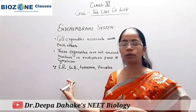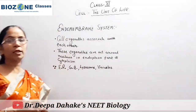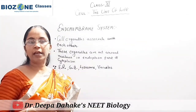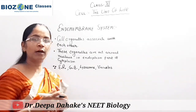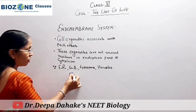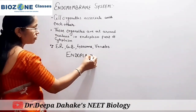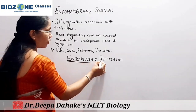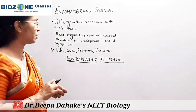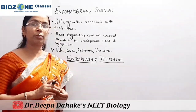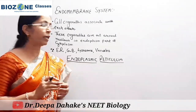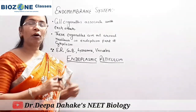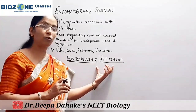Now we directly begin with our session: what is endoplasmic reticulum and how does it vary when present as smooth endoplasmic reticulum or rough endoplasmic reticulum? First we study the cell organelle endoplasmic reticulum. Reticulum in biology means a network-like structure — that fine network is called a reticulum. It is called endoplasmic because it is developed from the endoplasmic part of the cytoplasm or is present in the endoplasmic region.